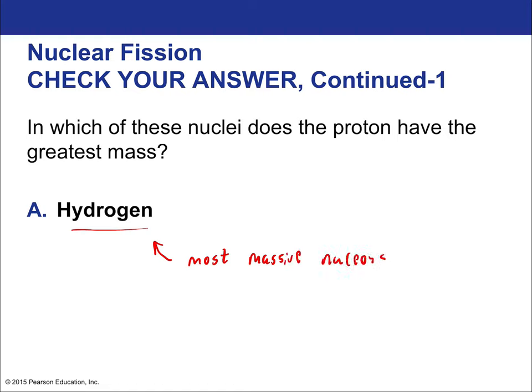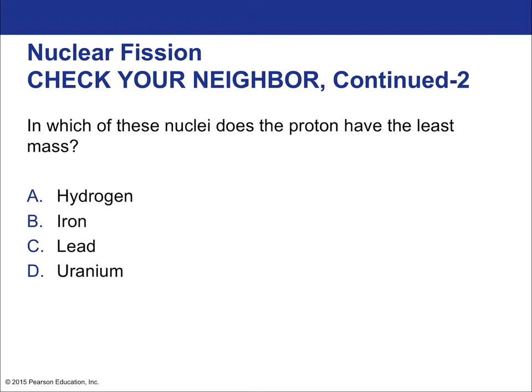The answer is hydrogen — it has the greatest mass per nucleon of any element on the periodic table, meaning the most massive nucleons. This makes it very bad for fission. Standard hydrogen has just a single proton with nothing to break apart. Even deuterium — a proton and a neutron — could not undergo fission to release energy; it would only consume energy.